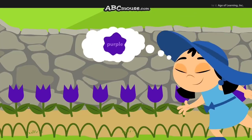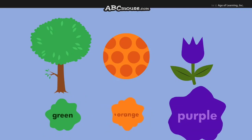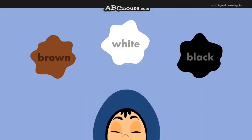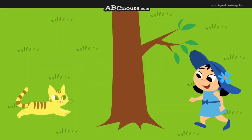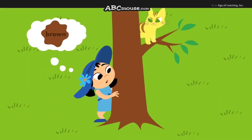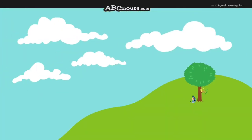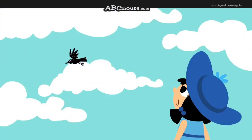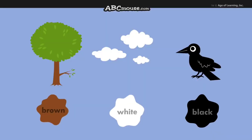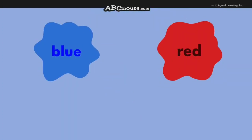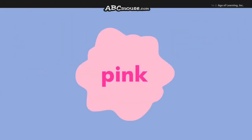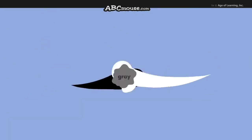Look at all the colors I can see. I can see the brown trunk of the tree. I see white clouds in the sky and a blackbird flying by. Look at all the colors I can see. Red and yellow make orange. Yellow and blue make green. Blue and red make purple. Red and white make pink. White and black make gray.